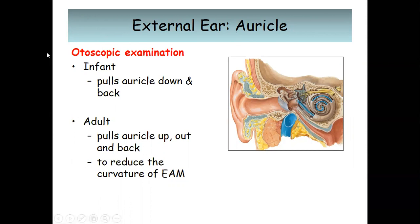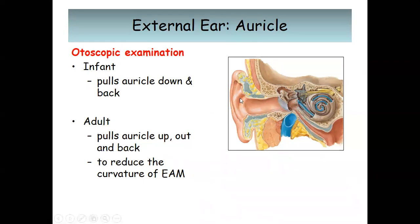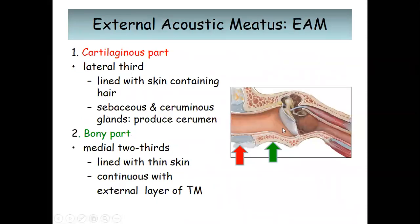When examining the ear, we use an otoscope, and this is known as an otoscopic examination. For infants, pull the auricle down and back to straighten the canal. For adults, pull the auricle up, out, and back. This reduces the curvature of the external acoustic meatus so the meatus becomes straight, allowing you to view the internal structure and the tympanic membrane.